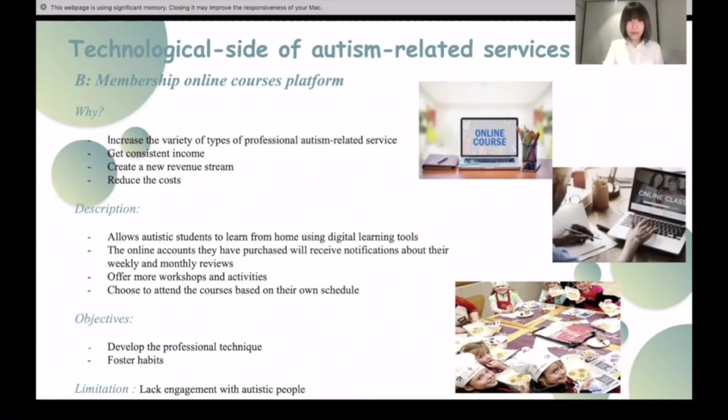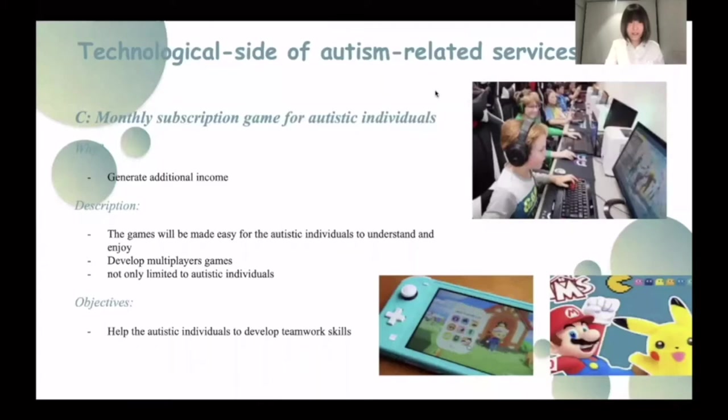One crucial disadvantage is that online courses may lack engagement with autistic people. Third, developing games for autistic individuals is intended to generate additional income for ACN. The games will be easy for autistic individuals to play and enjoy. ACN can also develop multiplayer game modes to help autistic individuals develop teamwork skills, which is beneficial for future employment. The games are not limited to autistic individuals — others who are interested may subscribe as well. Next, Lynette will expand on our second Blue Ocean strategy.